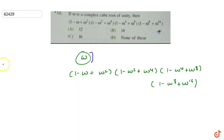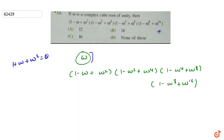Since omega is a cube root of unity, we have two key properties: 1 plus omega plus omega squared equals 0, and omega cubed equals 1.